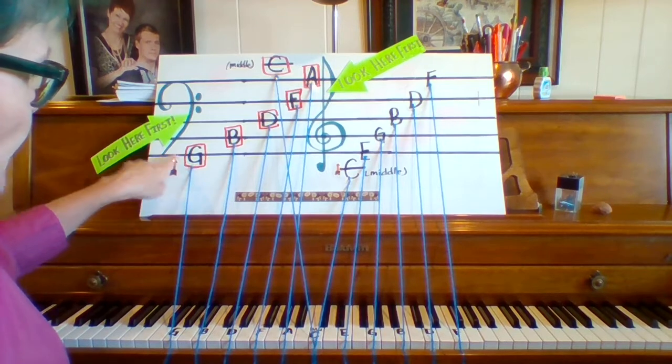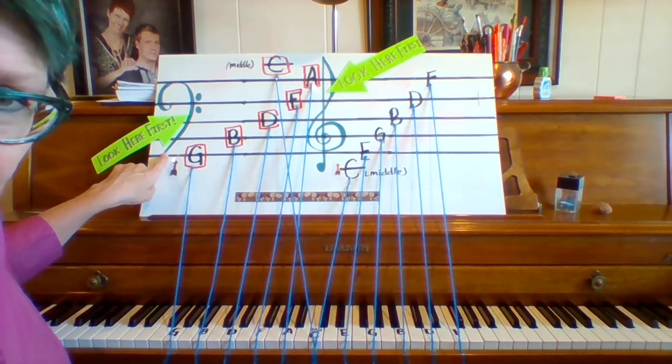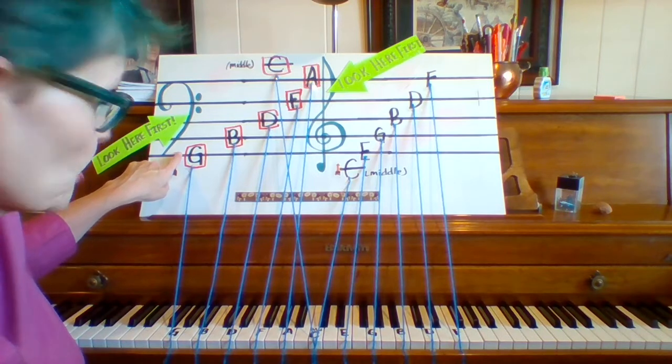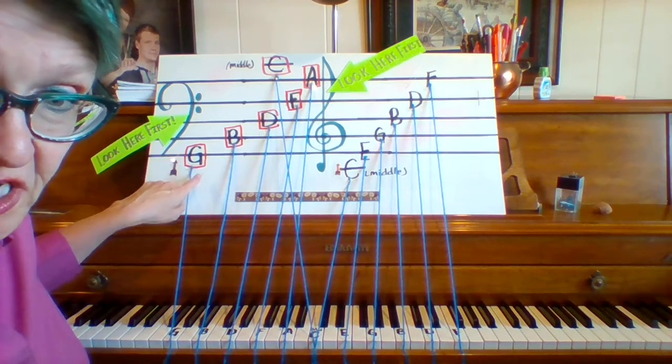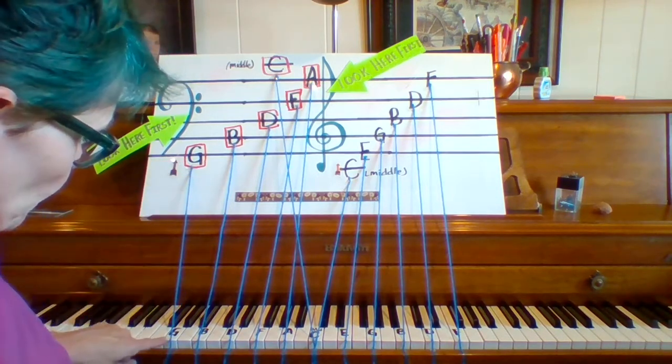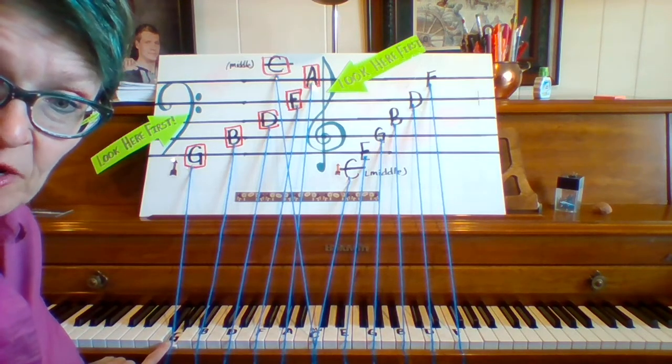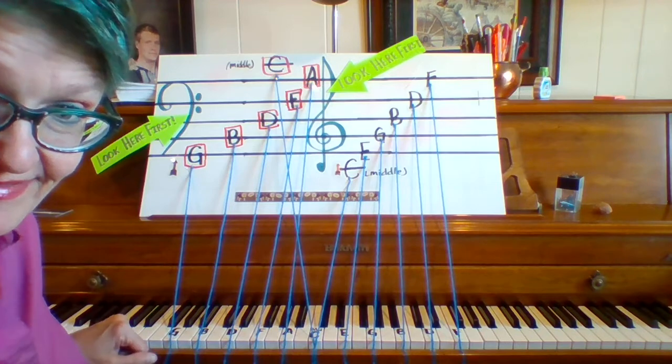Alright, so we begin on the first line. First line is always the bottom line, remember? The first line is Grandma, or G. We follow the string down. And it's always that G on the piano. Always. Alright?